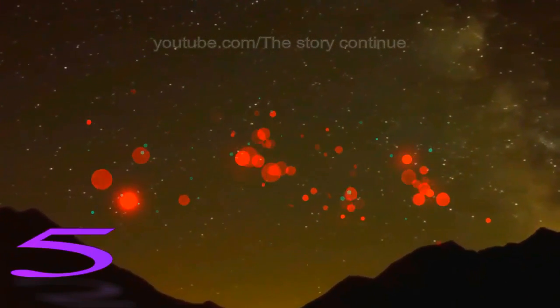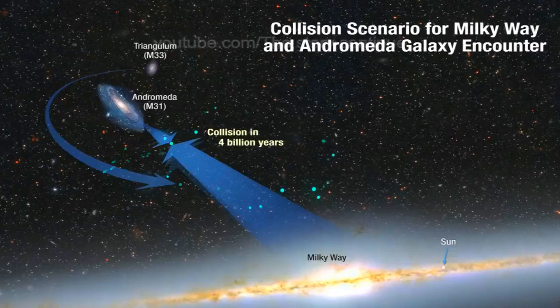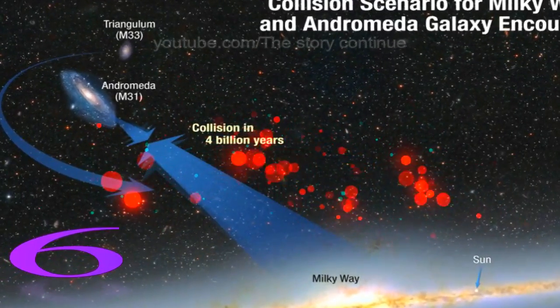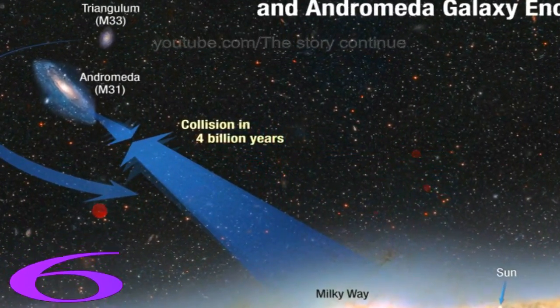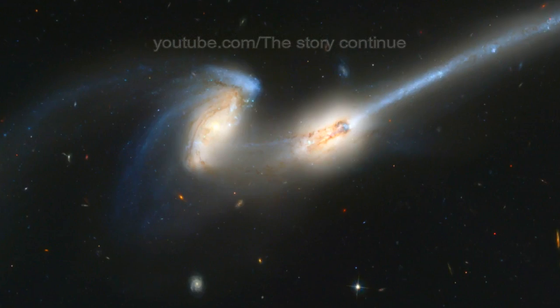Fact five: The stars, gas, and dust of the Milky Way all orbit the center at a rate of about 220 kilometers per second. This constant rate for all stars at different distances from the core implies the existence of a shell of dark matter surrounding our galaxy.